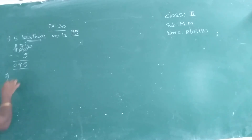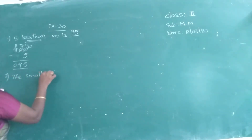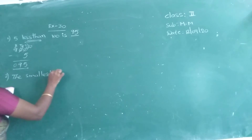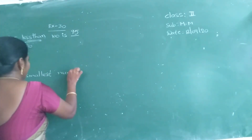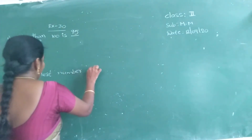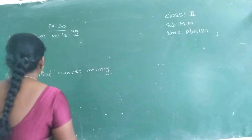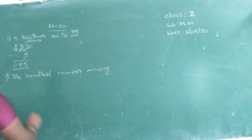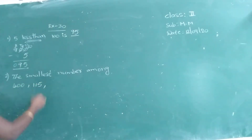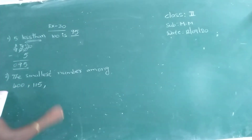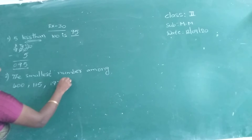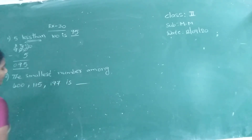Next problem: the smallest number among 400, 115, and 197. In these three numbers, which is the smallest number?